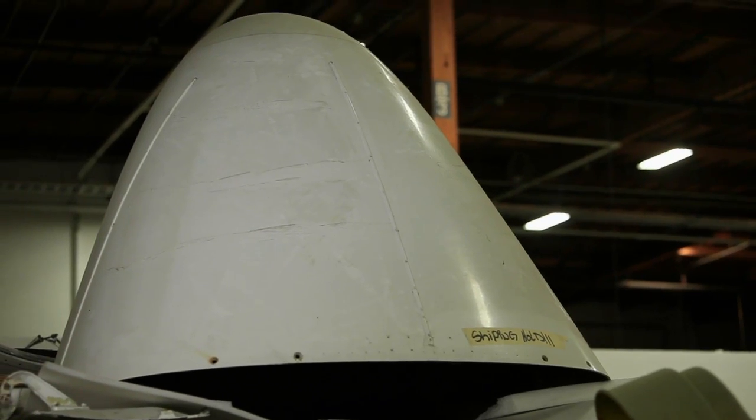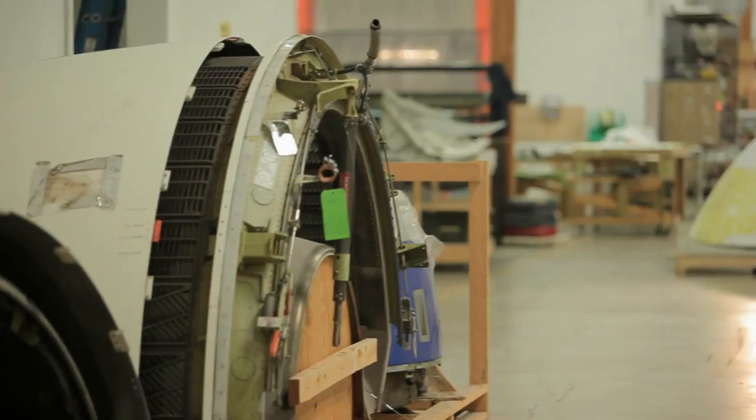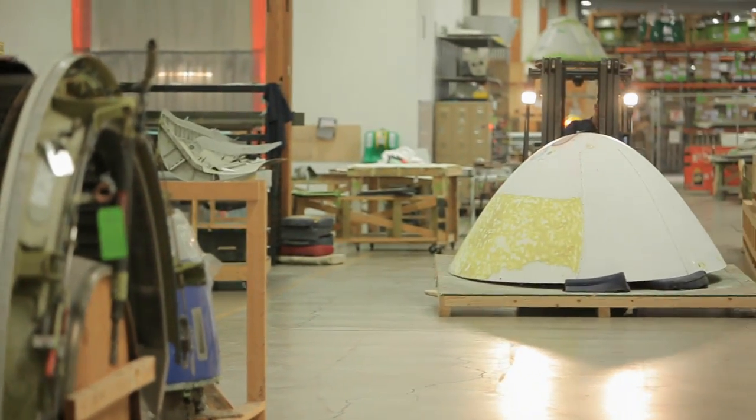The main thing we use composites for is the airframes, the wings, radomes, rudders, elevators. This particular unit that I'm working on is the radome.